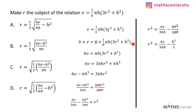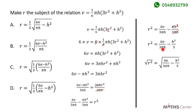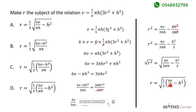Since we want R and R is squared, we take the square root of both sides: R = √(6V/(3πH) − H²/3). We can factor out 1/3 from both terms under the square root: R = √(1/3 × (6V/(πH) − H²)). Looking through the options, the correct option is D.